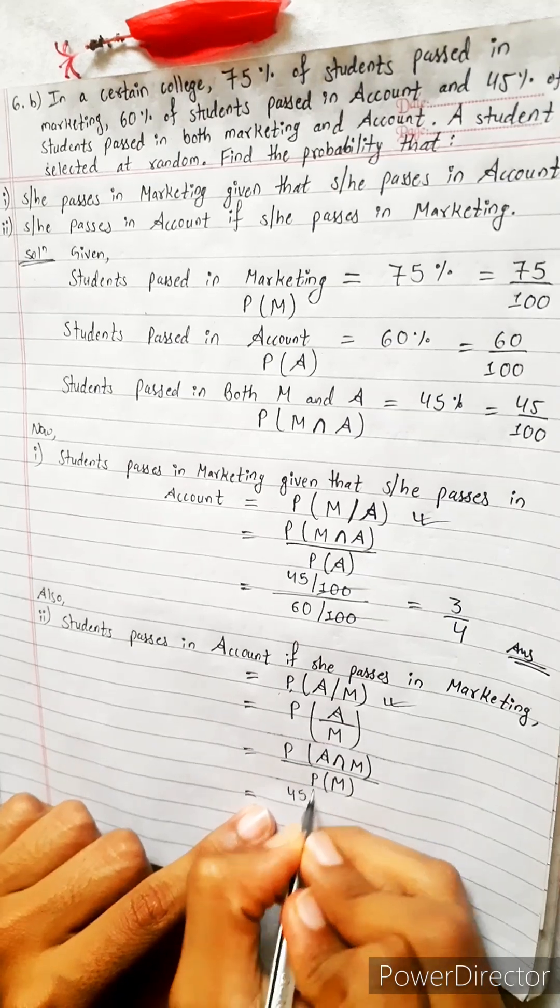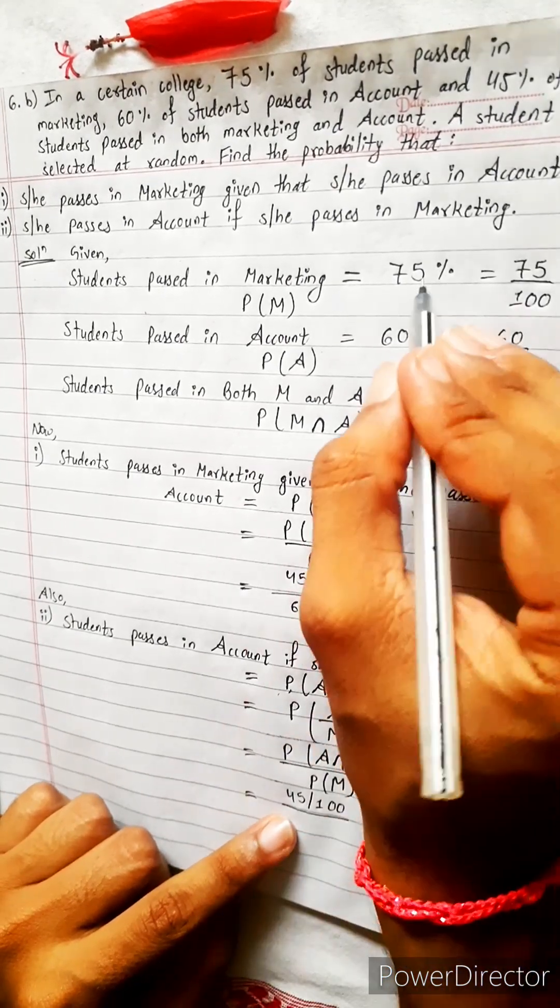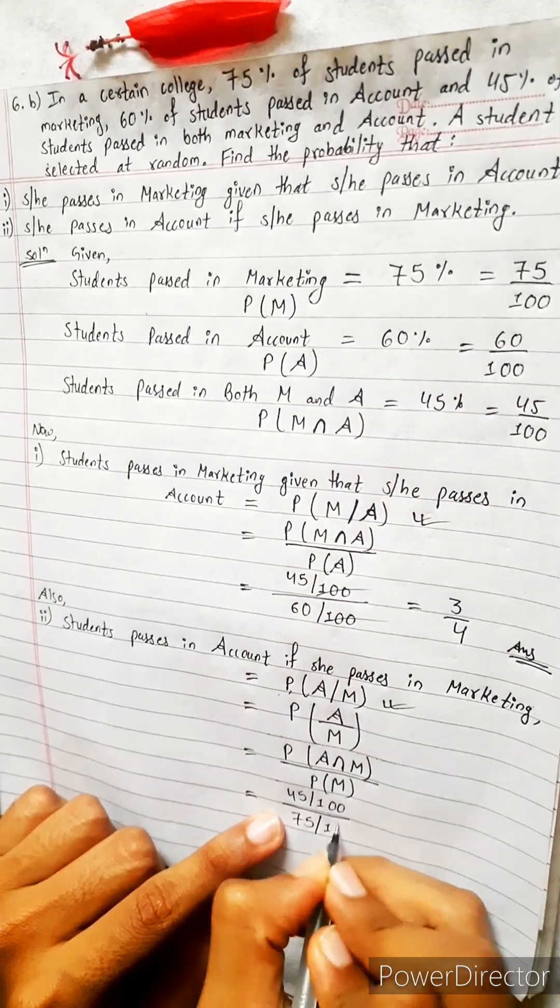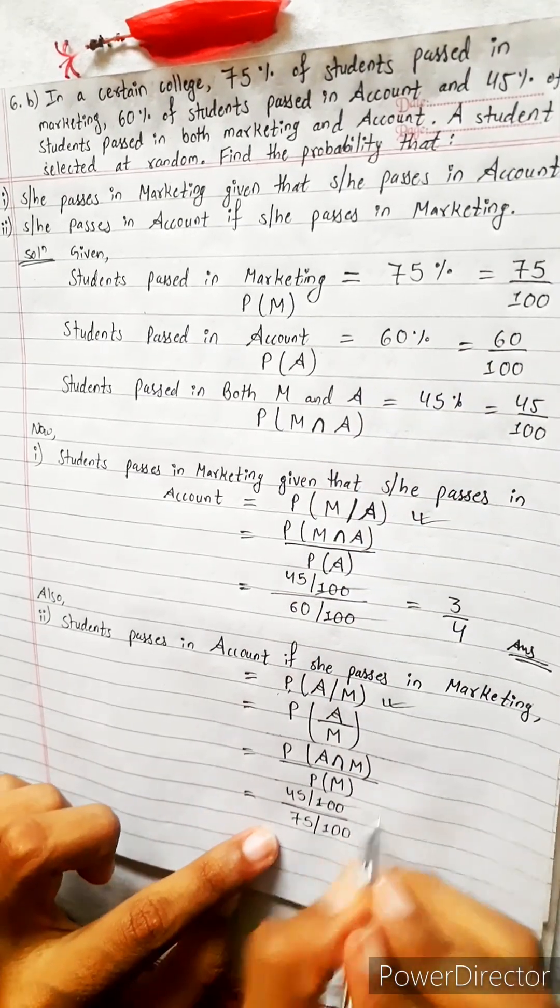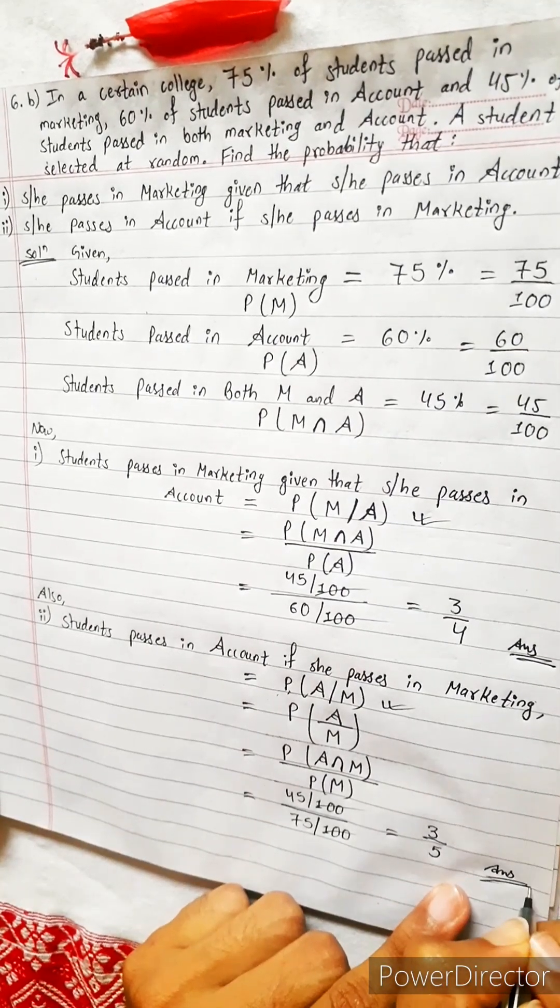Now copy down. This is 45 by 100 divide by PM, which is 75%, so 75 by 100. Then after, what can we do? Cancel this and use calculator. I think it will be 3 by 5. Yes, absolutely correct answer.